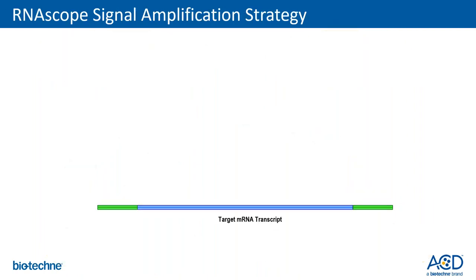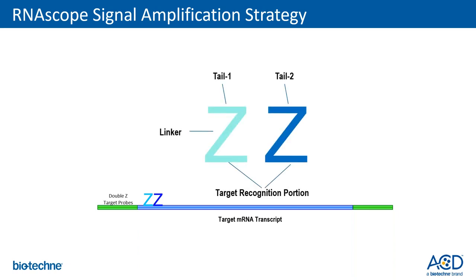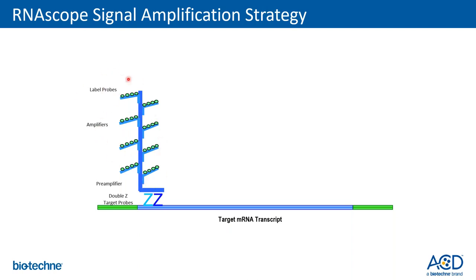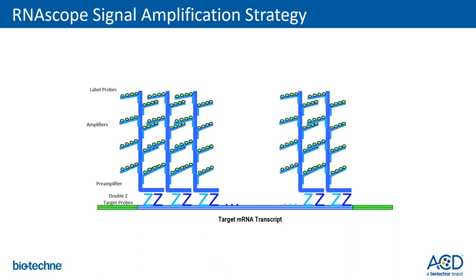How does signal amplification occur? The process starts with hybridization of a double Z probe pair to the target RNA, creating a pre-amplifier binding site. Binding of the pre-amplifier is followed by binding of amplifiers and then label probes. Each double Z probe can incorporate approximately 400 label probes per double Z pair. Since each probe set consists of about 20 double Z pairs, this leads to an approximate 8,000-fold amplification for a given RNAscope probe.